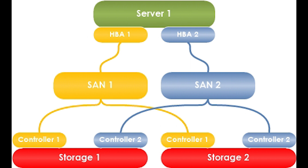An example would be a hard disk drive that may connect to two controllers on the same computer, or a disk may connect to two fiber channel ports. Should one controller port or switch fail, the operating system can reroute through the remaining controllers, port, or switch transparently and with no changes visible to the applications, other than perhaps resulting in increased latency.